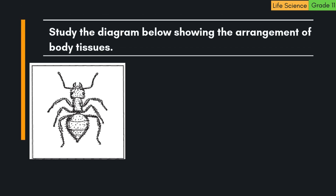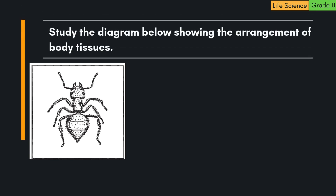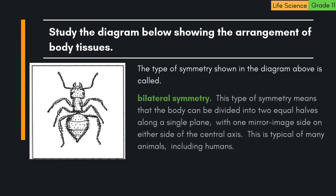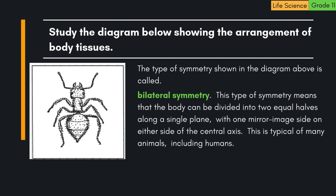Study the diagram below showing the arrangement of body tissues. The type of symmetry shown in the diagram is bilateral symmetry. This type of symmetry means that the body can be divided into two equal halves along a single plane, with one mirror image side on either side of the central axis. This is typical of many animals, including humans.